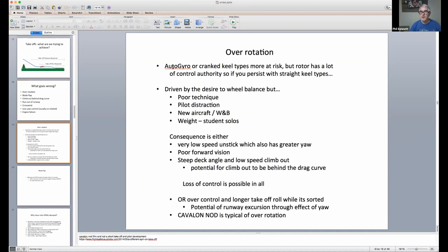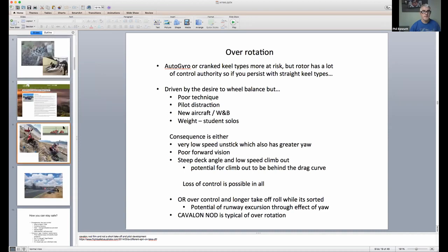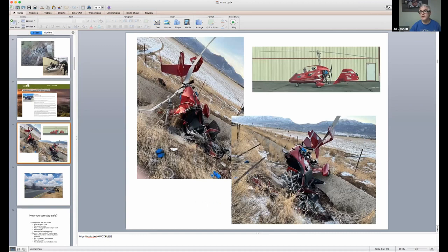So, over-rotation. Auto-gyro aircraft, or things with a crank keel, are more at risk. So, things like that American Ranger would be predisposed to over-rotation, because they, obviously, the kinked tail allows that, if I go back to just to show you what I mean.